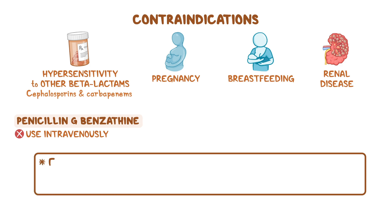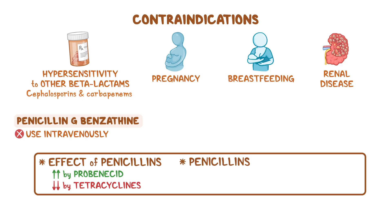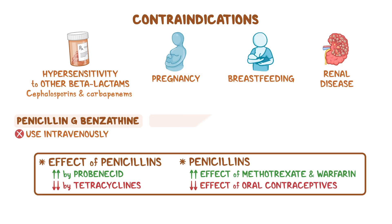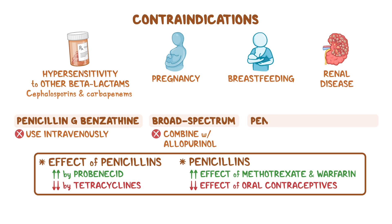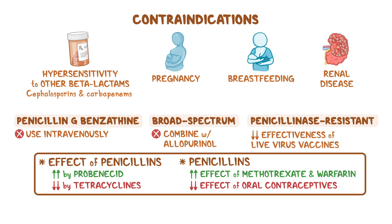Regarding interactions, the effect of penicillins is increased by probenecid and decreased by tetracyclines. Penicillins, on the other hand, increase the effects of methotrexate and warfarin and decrease the effect of oral contraceptives. Broad-spectrum penicillins should not be combined with allopurinol, since it increases the risk of developing a skin rash. Penicillinase-resistant penicillins decrease the effectiveness of live virus vaccines, so they shouldn't be given together.